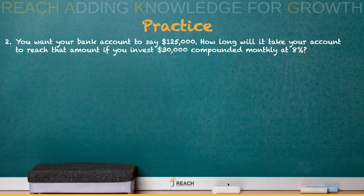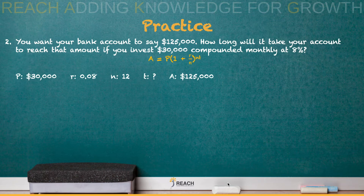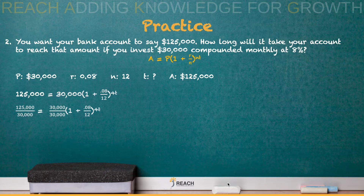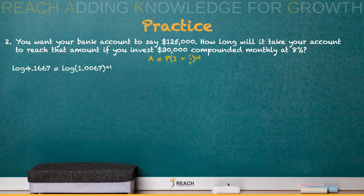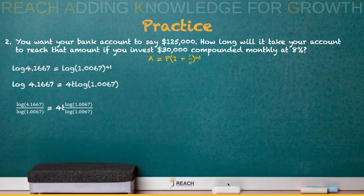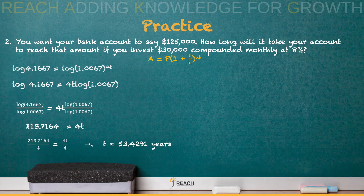Number two — make sure you read the problem and figure out which formula you need. Compounded for a specific time because it says compounded monthly. Label the variables and we're trying to find our time. Plug into the formula and divide by 30,000. Take the quantity (1 plus the fraction) in the calculator and get 1.067. Using the property of logs, take the log on both sides and apply the power rule, bringing the exponent to the front. Divide by log 1.067 on both sides, then divide by 4, and we get T as approximately 53 and a half years.